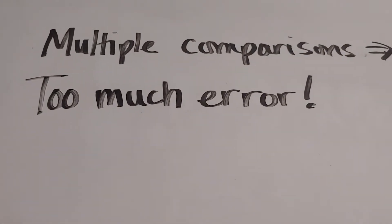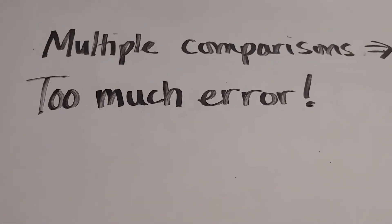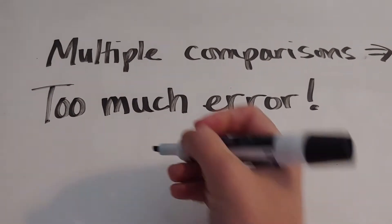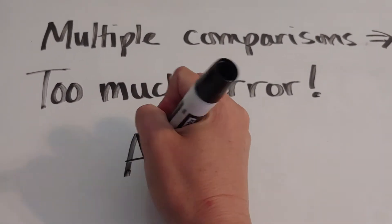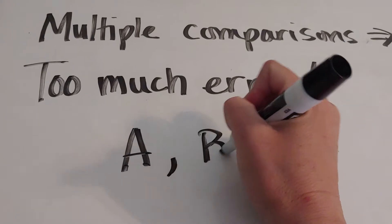In our second video about multiple comparisons, we're looking at the idea of too much error. So we have our three groups A, B, and C.